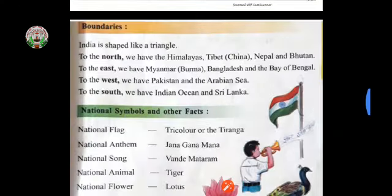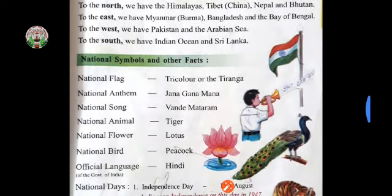Now see the national flower — Lotus. Lotus is the national flower of India. The lotus symbolizes spirituality, fruitfulness, wealth, knowledge, and illumination. The most important thing about the lotus is that even after growing in murky water it is untouched by its impurity. The lotus also symbolizes purity of heart and mind.